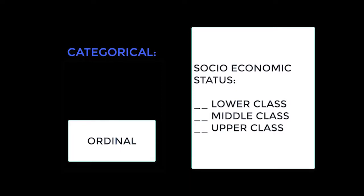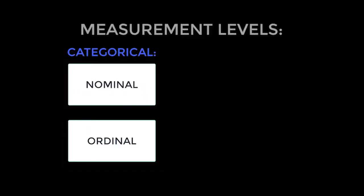Another example of ordinal measurement might be indication of socioeconomic status — a person might indicate low, middle, or upper class. Both of these examples are ordinal in that they are a collection of categorical information but also have a logical ordering. Both nominal and ordinal measurement levels are considered categorical, meaning the measurement captures categories and assigned numbers. For this level of measurement, there can be limited variance, as often only a few categories are captured.